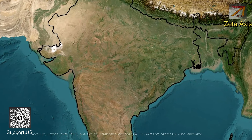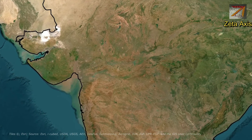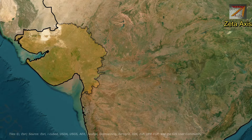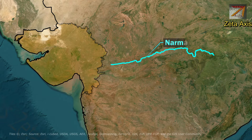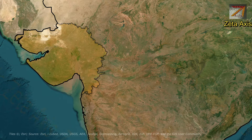Hello friends, welcome to Zeta Axis. Today we are going to discuss important rivers of Gujarat. We have already discussed about Narmada River, so we will discuss about rivers other than Narmada flowing through Gujarat.